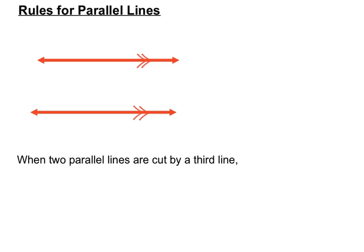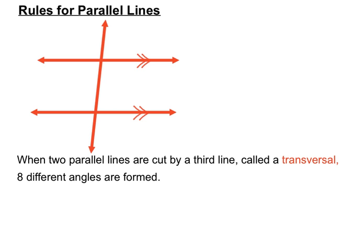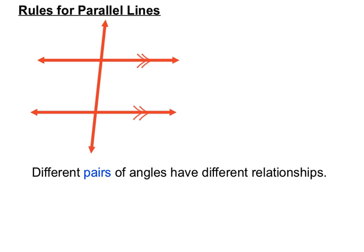When two parallel lines are cut by a third line we have a special name for it — we call it a transversal. That almost vertical line there is a transversal; it's the one that's cutting the other two parallel lines. When two parallel lines are cut by that third line, eight different angles are formed, and different pairs of those angles have different relationships, and we're going to explore them in this video.